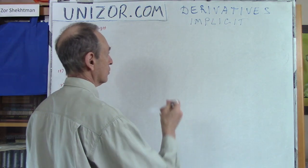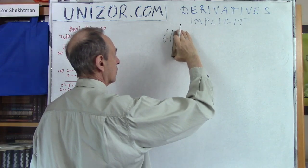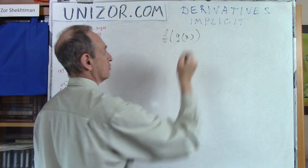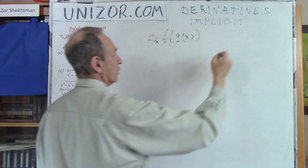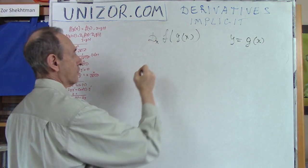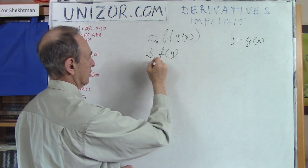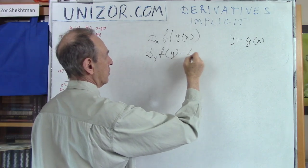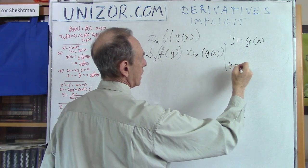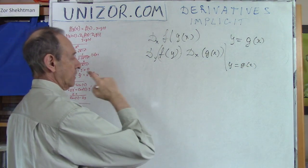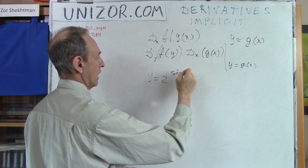Let me remind you the chain rule. If you have a compound function f of g of x and you'd like to take its derivative, let y be g of x. You differentiate f of y by y and multiply it by the differentiation of g of x, then substitute y equal to g of x. For example, if you have f of x equals 2 to the power of sine x...